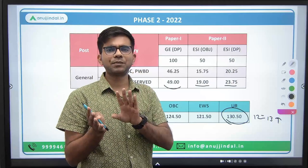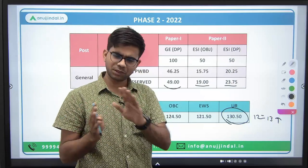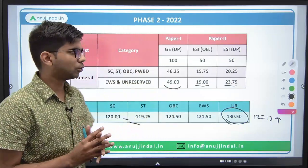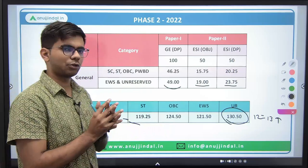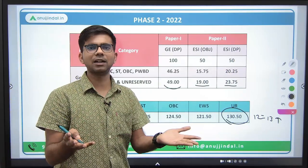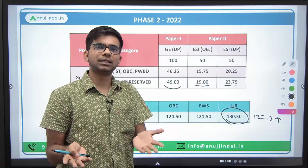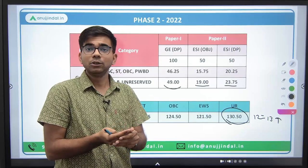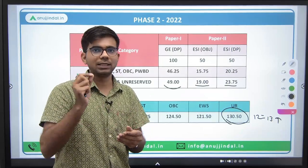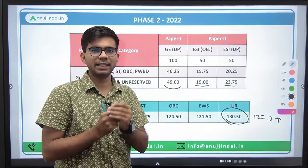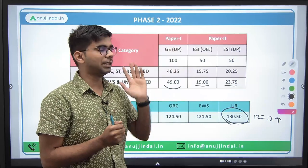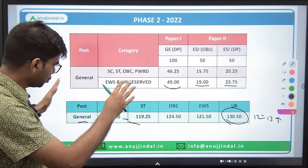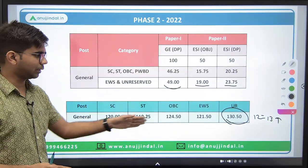So we cannot leave any portion — static and current are given equal weightage. Static is very important for both ESI and ARD, especially for the descriptive paper. We cannot skip static and only do current affairs — that query comes up frequently, but static is very important.